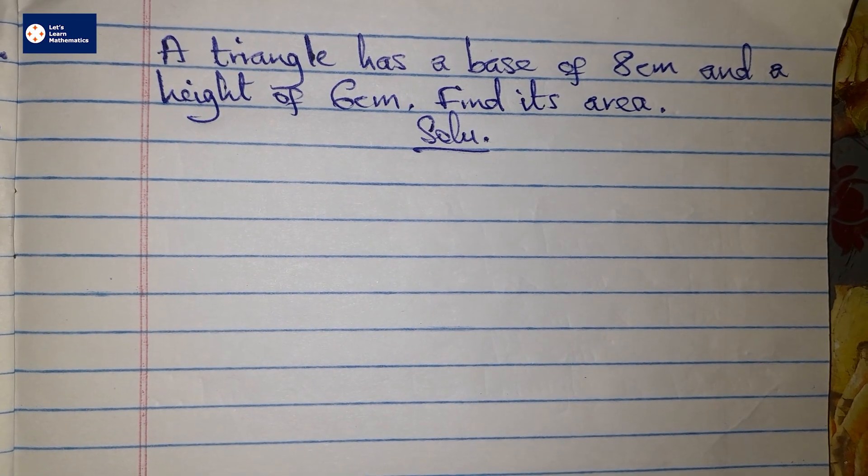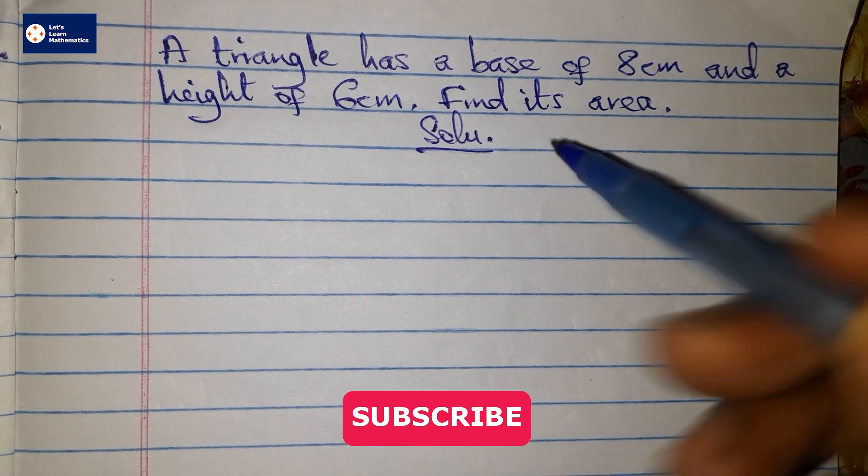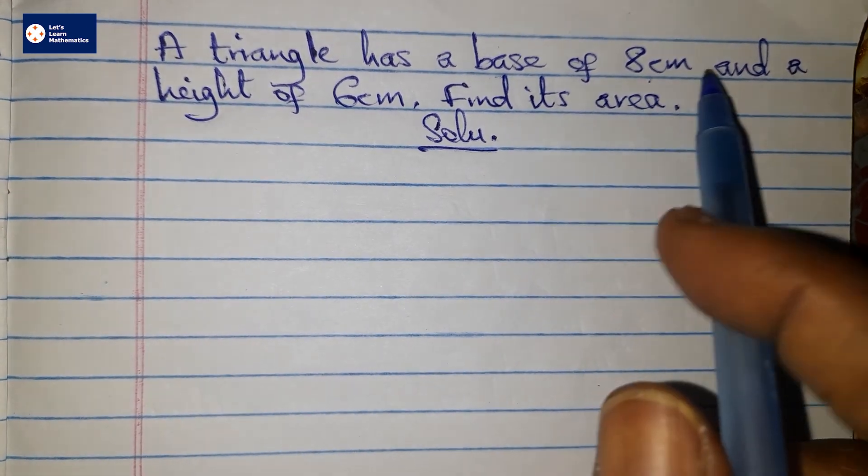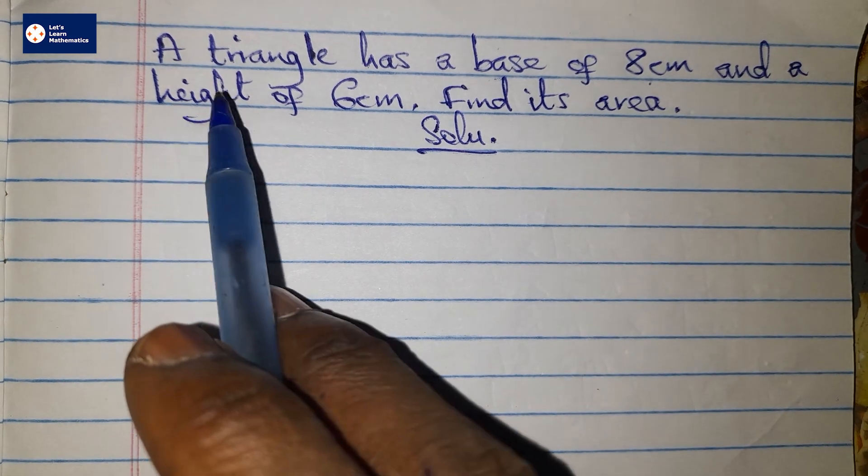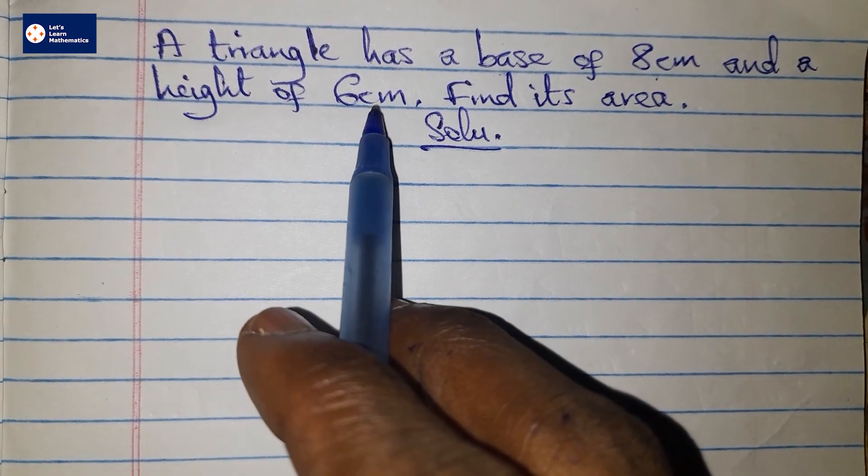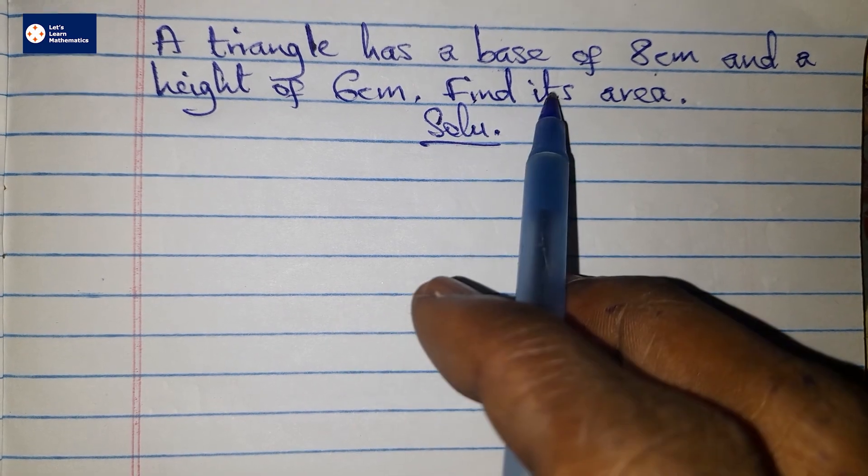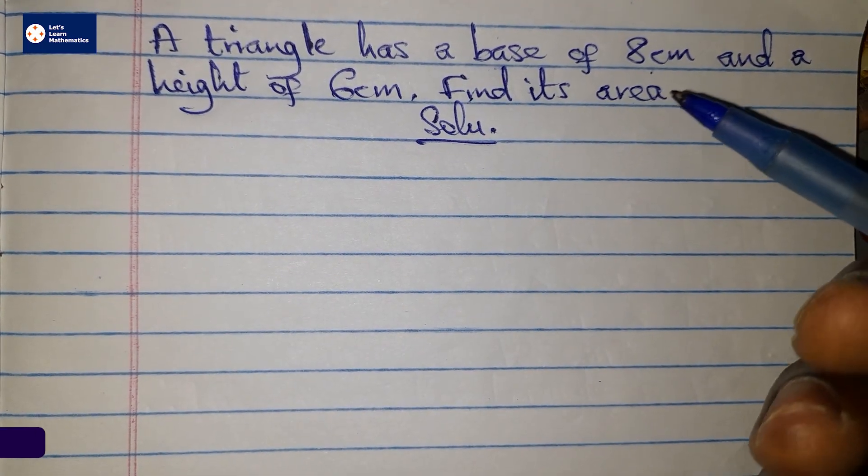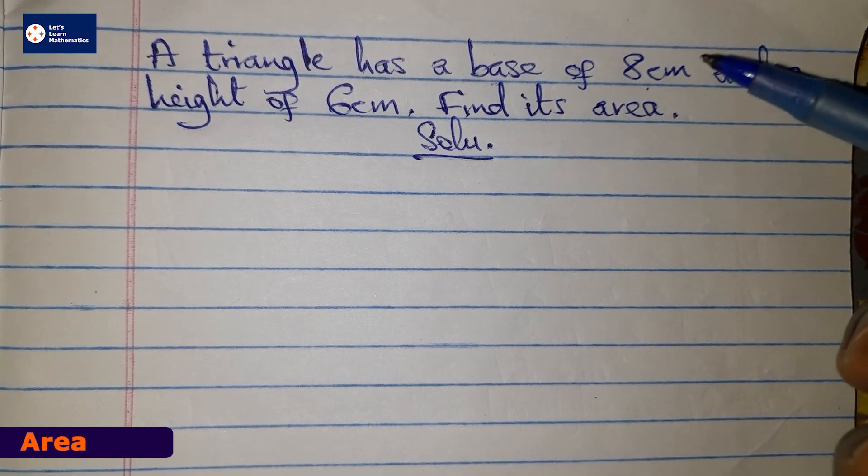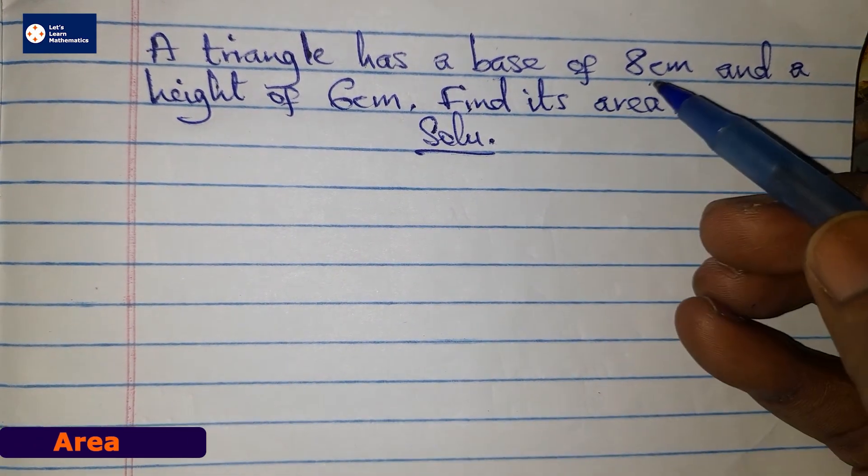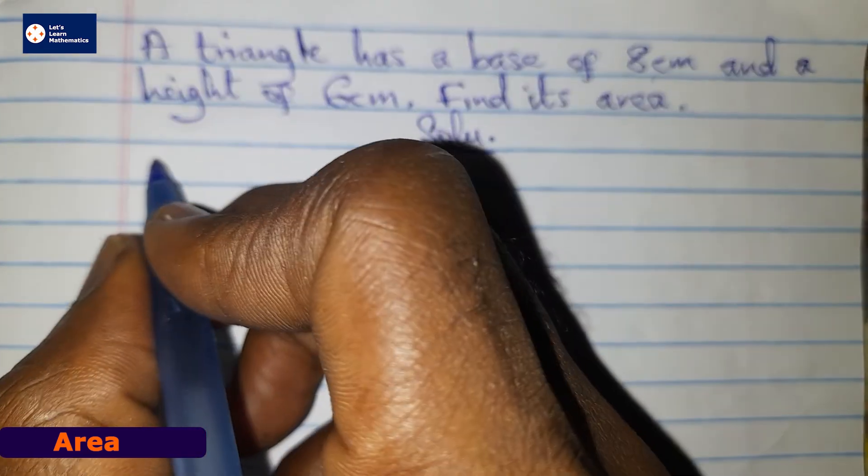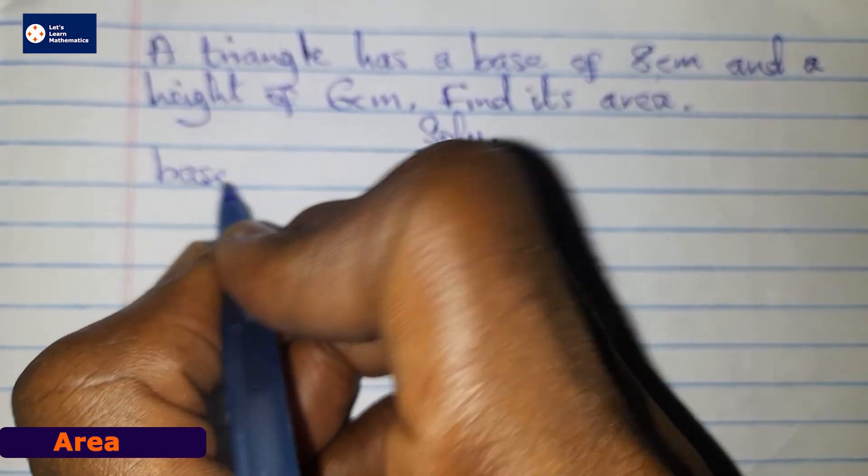Alright, so this question says that a triangle has a base of 8 centimeters and a height of 6 centimeters, and we have to find its area. As we always do in our solutions, we have to write the data from the question first.